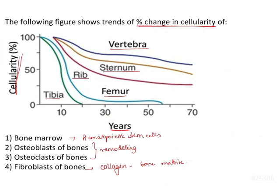Among the four options, a change in cellularity as depicted in the graph is seen in which portion of the bone? Looking at the graph, cellularity drops to 0 at approximately 20 years in case of tibia. The tibia shows 0% cellularity after 20 years of age, whereas femur shows a feeble amount of cells up to older age. In case of rib, sternum, and vertebra, there is a decrease in cellularity but it does not reach 0. So 20 years of age acts as a critical point.